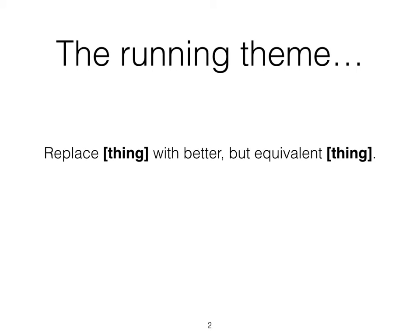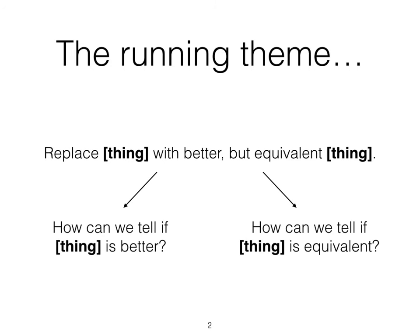If you recall last time, one thing that I absolutely begged you to remember: the running theme of this class is going to be the idea of taking a thing of some sort and finding another thing of the same type that is better but still in some way equivalent. The two things we're going to be exploring are: first, how can we tell if the new thing is better? And second, how can we tell if the new thing is equivalent?